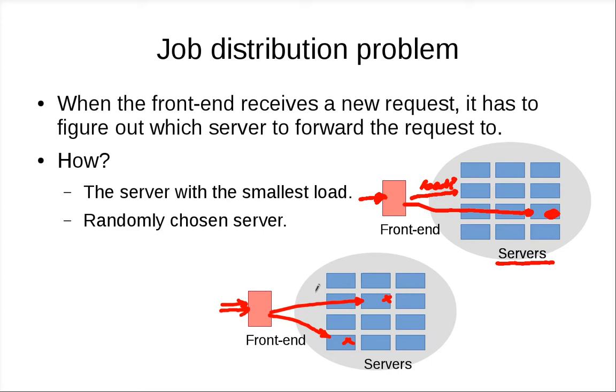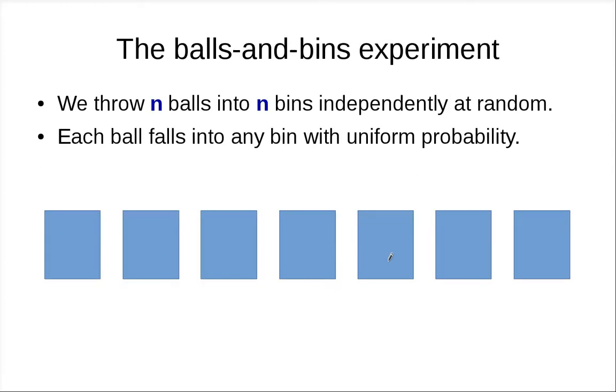We would like to analyze this protocol. This approach is pretty easy to implement, and there's no synchronization between the front end and the workers. So the question is, forwarding the job to the one with the smallest load usually gives you the best results. However, can we say something about this random approach? Is it any good?